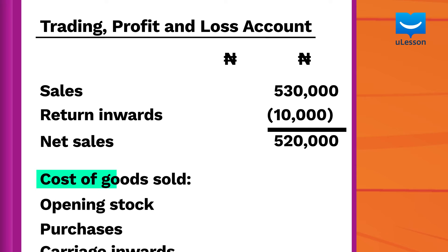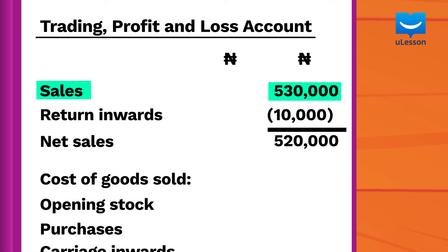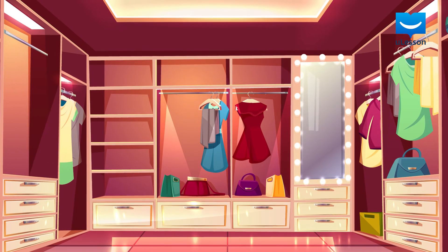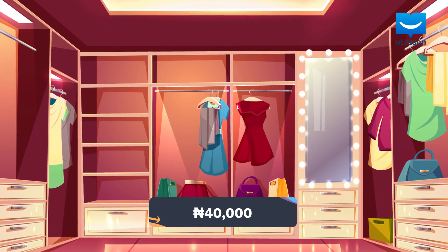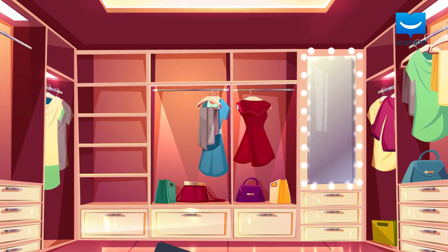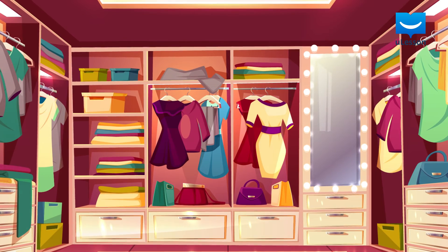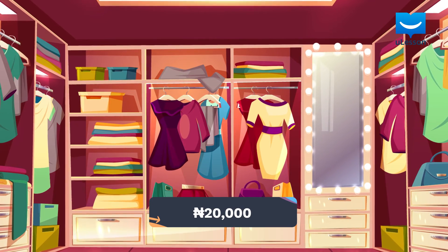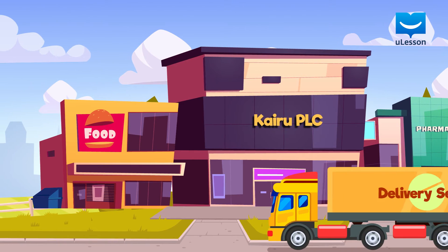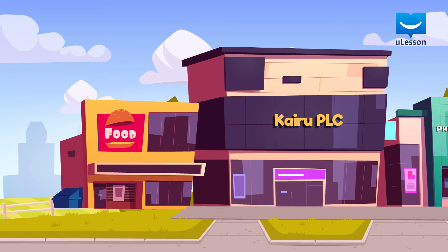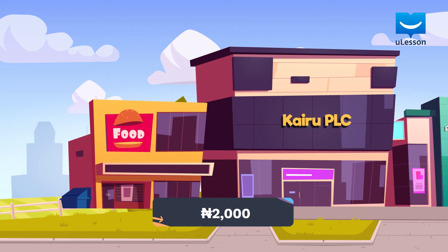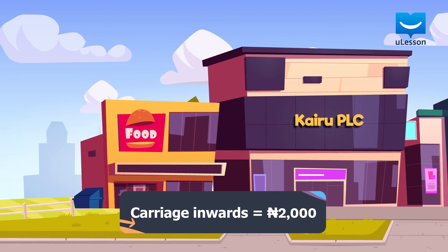The next step is to get the costs of making the goods that were sold to earn the sales of 530,000 Naira. At the beginning of the year, Cairo PLC had some available stock worth 40,000 Naira. This was not enough, so they purchased more stock worth 20,000 Naira. They were heavy, and so Mr. Cairo had to use a truck to transport them to the company. He paid the truck driver 2,000 Naira. This is known as carriage inwards.